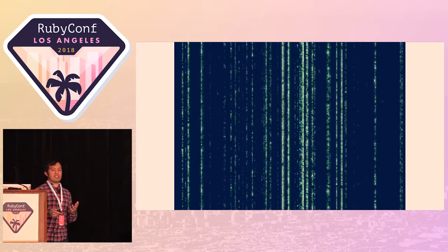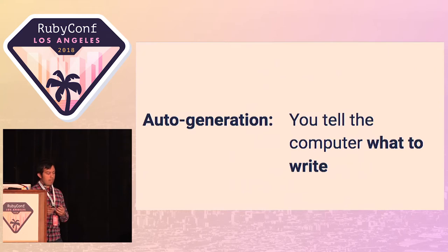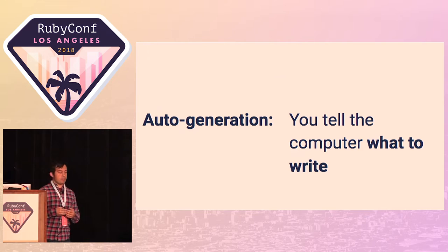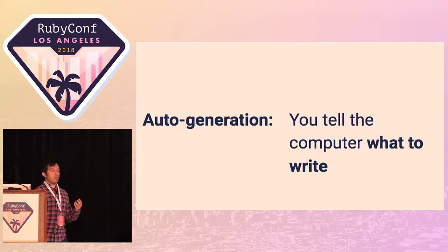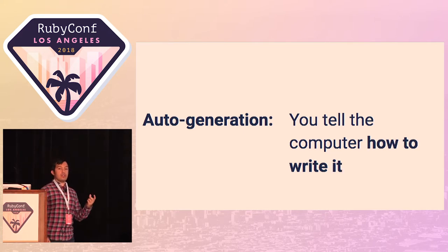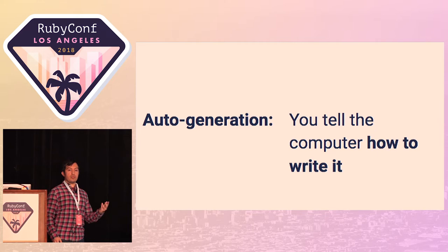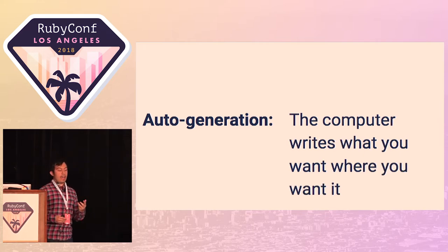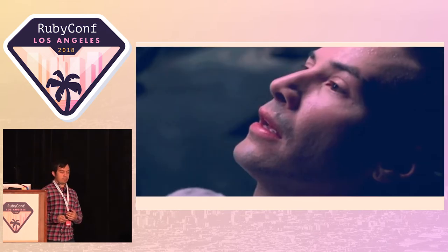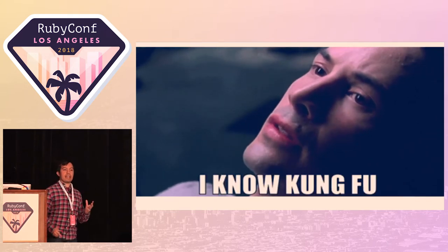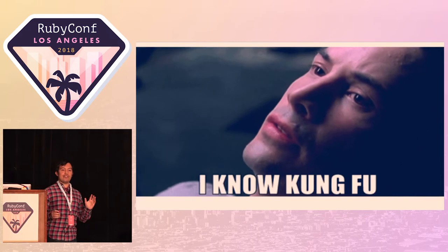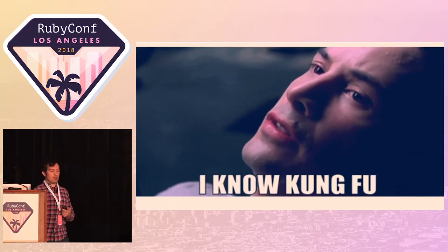So I'm going to reframe this idea of auto-generation in terms of what you're actually doing throughout this process. When you are auto-generating code, when you want your computer to write code for you, you're telling the computer exactly what you want it to write and exactly how you want it to write it. The computer is going to go ahead and perform those actions — write what you want exactly where you want it. Hopefully this feels less black-box. This is just another tool in my awesome Ruby toolbox.